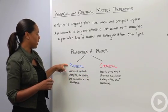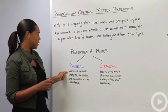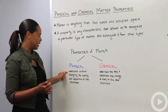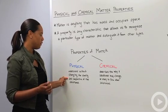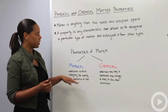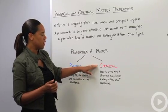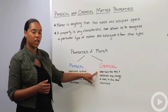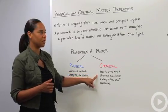A physical property of matter is defined as being measured without changing the identity and composition of the substance, versus a chemical property describes the way a substance may change or react to form other substances.